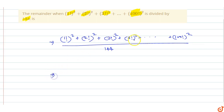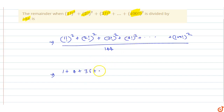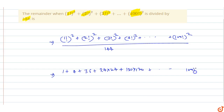So we find the remainder. 1 factorial is 1, whole square is 1. 2 factorial is 2, so 2 squared is 4. Plus 3 factorial is 6, so 6 squared is 36. Plus 4 factorial is 24, so 24 squared is 576. 5 factorial is 120, so 120 squared, and so on up to 100 factorial squared.